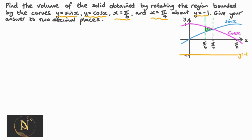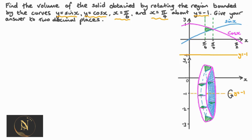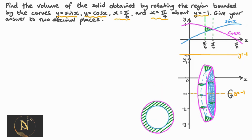It can be helpful if we first try and sketch our solid. The solid is a ring where the cross sections of the band are wedge-shaped. To find the volume of this solid, we sum using integration the areas of all its vertical cross sections. The cross sections are actually circular washers, where the outer edge is bounded by cosine x and the inner edge by sine x.